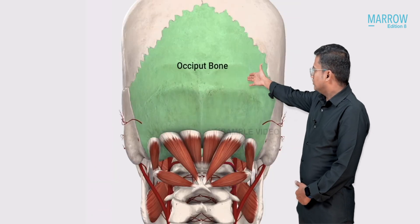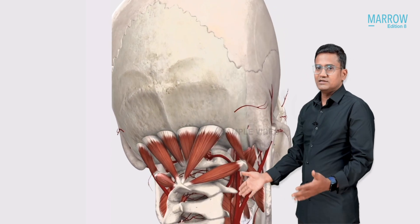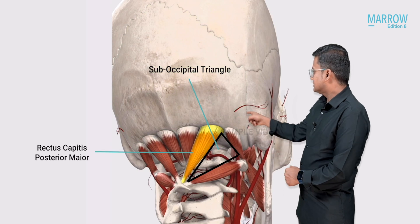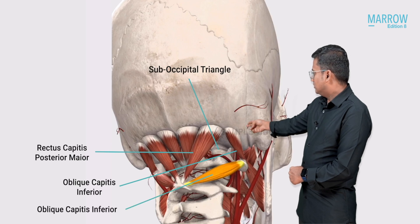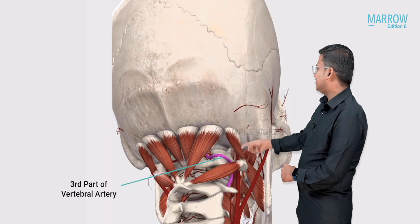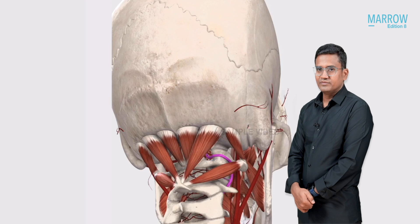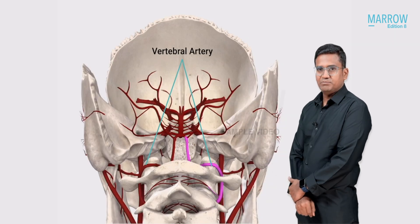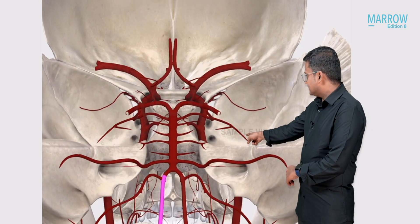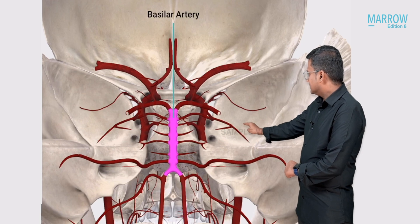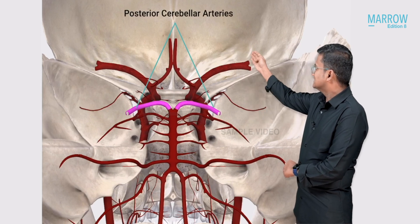This is the occipital bone. Below the occipital bone we have the suboccipital triangle, whose boundaries are rectus capitis posterior major, oblique capitis superior, and oblique capitis inferior. The third part of the vertebral artery is a content of this triangle. The two vertebral arteries pass through the foramen magnum, join together to form the basilar artery, and the basilar artery gives two terminal branches — the posterior cerebral arteries.